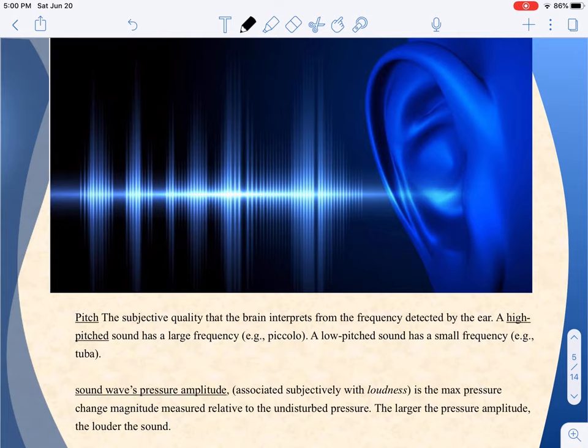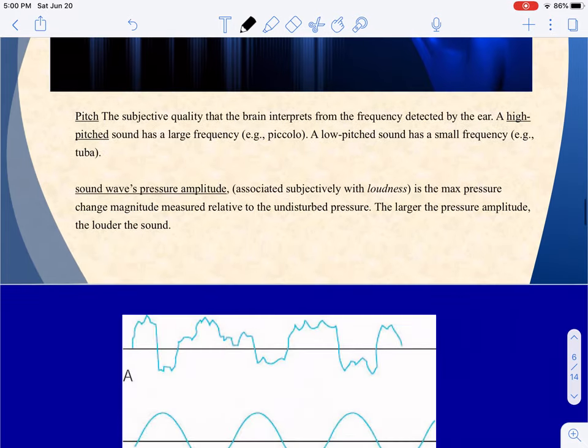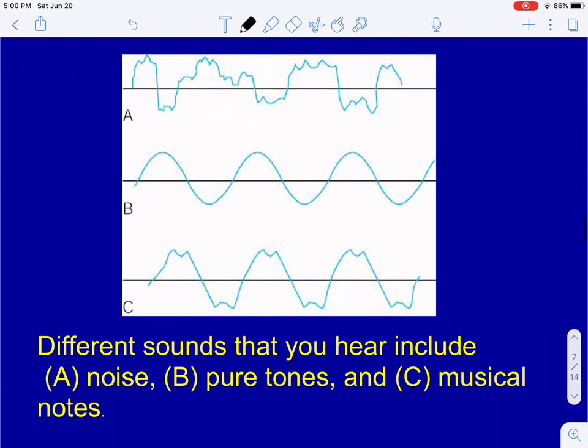The pitch that you hear has to do with the frequency, but also some subjective qualities that the brain has to interpret in order to figure out what it would call the pitch. If you took an example of a few different sound waves like you're seeing here with A, B, and C, you might call the first sound wave noise. Your brain would interpret this one as noise, and the reason for that is because there's really no discernible frequency at all here.